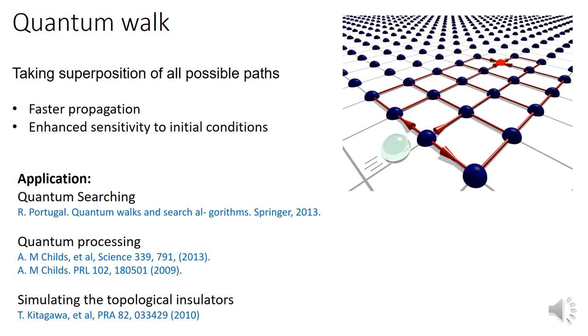Unlike classical random walk, particles that perform a quantum walk can take superposition of all possible paths through the environment simultaneously. This leads to faster propagation and enhanced sensitivity to initial condition.